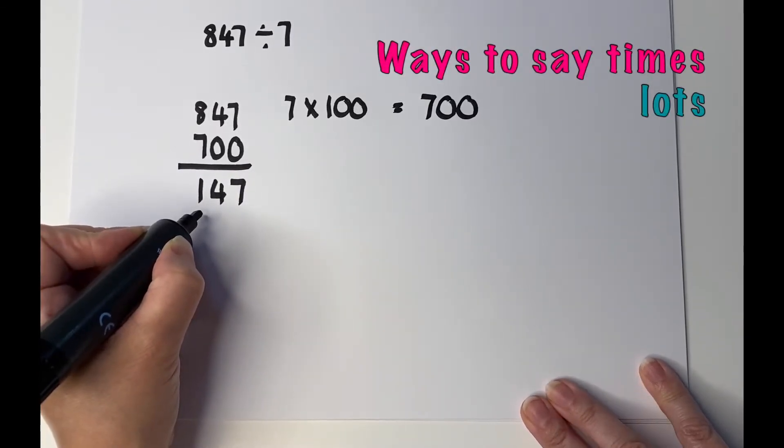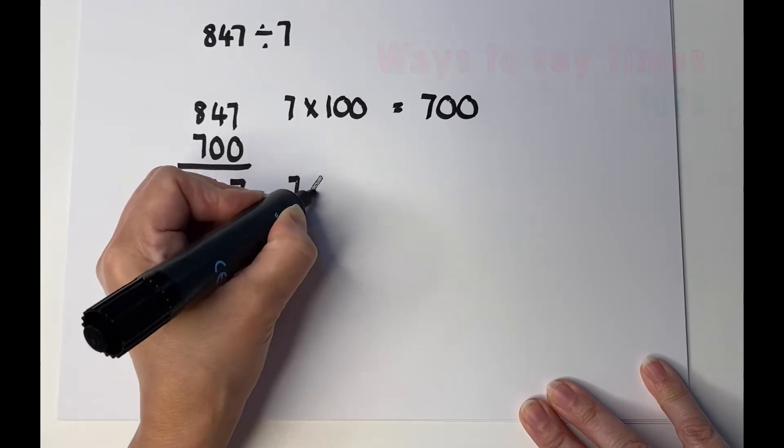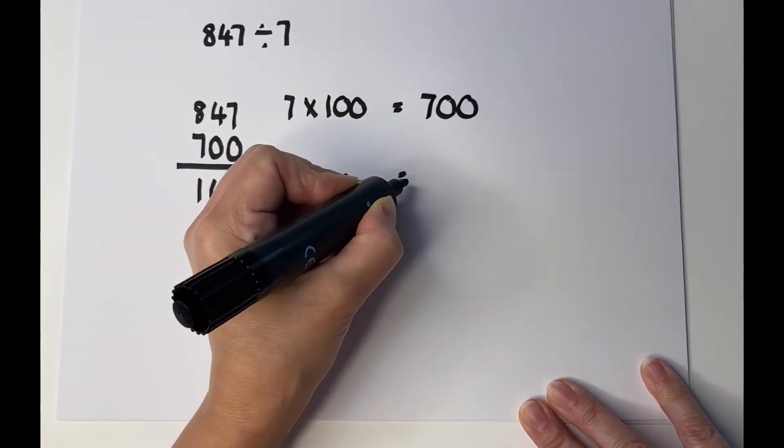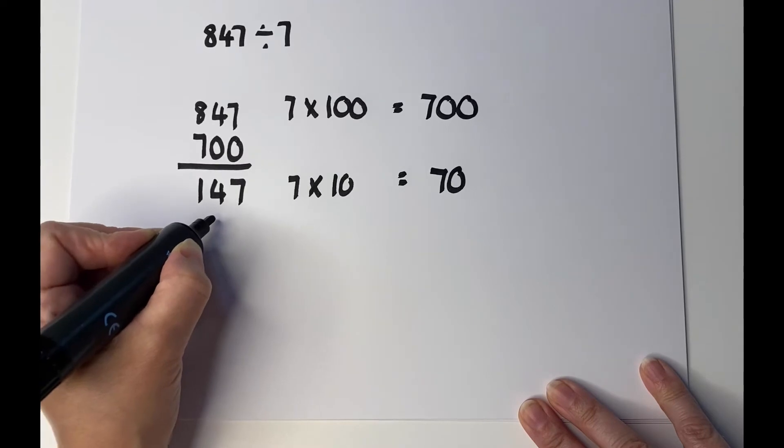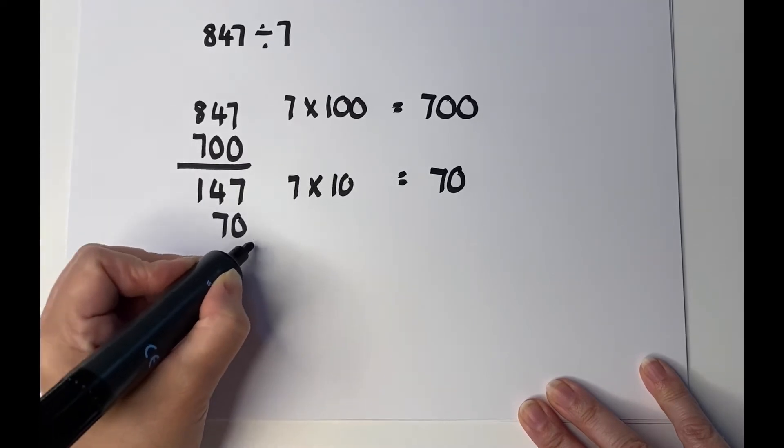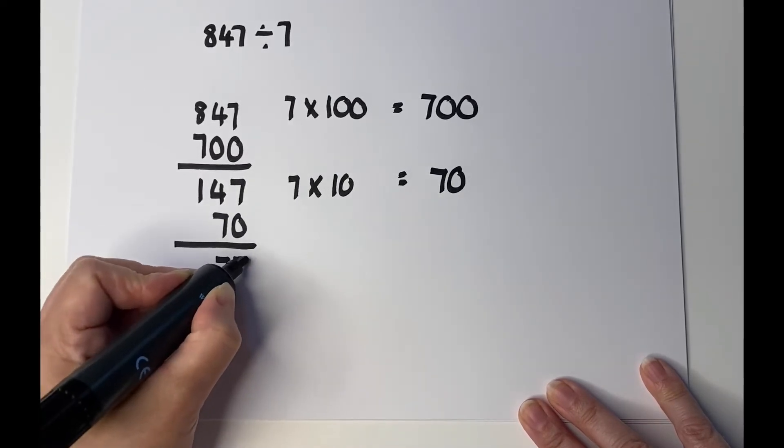The next one we can do is 7 lots of 10, so 7 times 10 equals 70. I'm going to take that away, which leaves us with 77.